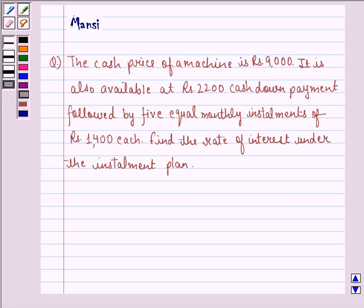Hi and welcome to the session. Let's work out the following question. The cash price of a machine is Rs 9,000. It is also available at Rs 2,200 cash down payment followed by 5 equal monthly installments of Rs 1,400 each. Find the rate of interest under the installment plan.